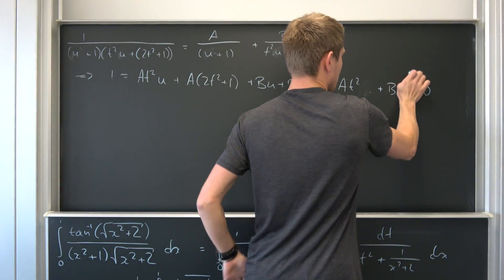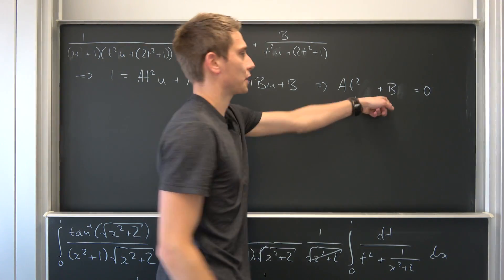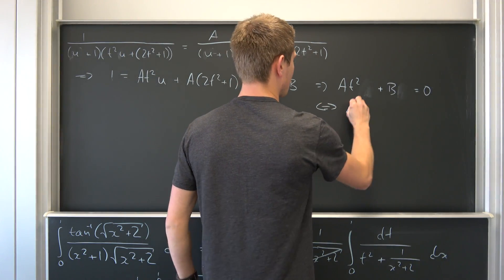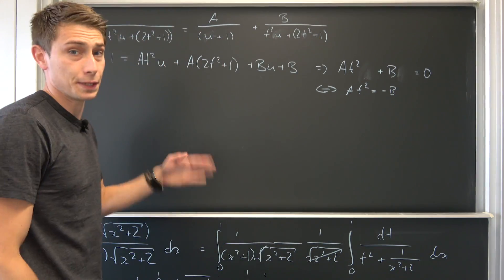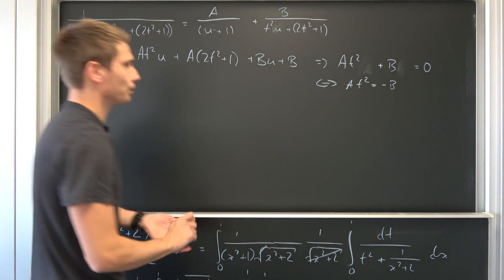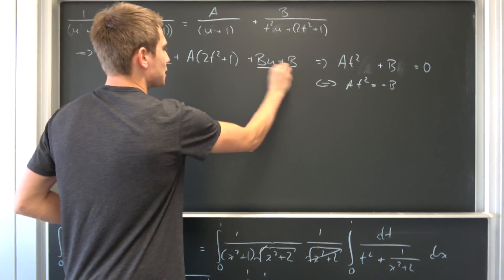So that's just a polynomial in u. So we are just going to consider those coefficients. Subtracting B on both sides leaves us with A times t squared being nothing but negative B, or B being nothing but negative this term. That means we got rid of this and that.